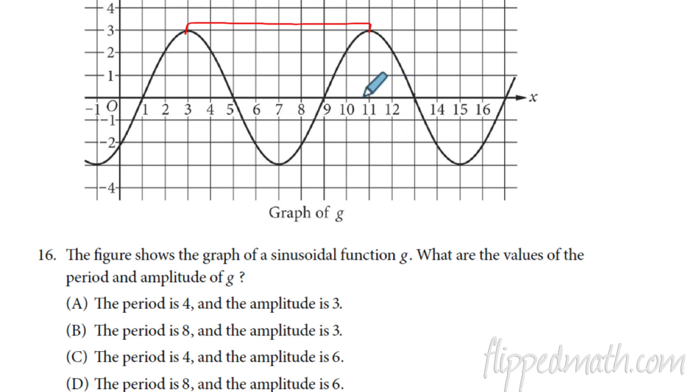We just need the amplitude. The amplitude is the distance from the midline, which is in the middle, to the maximum. Remember it's not the whole distance. It's only from the midline to the maximum. That's three. So we're looking at a period of eight, amplitude of three. That is choice B there.